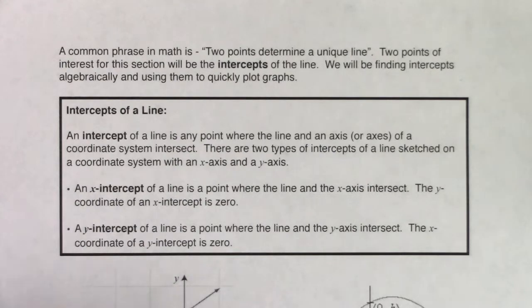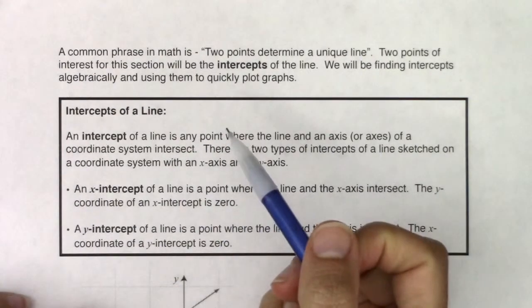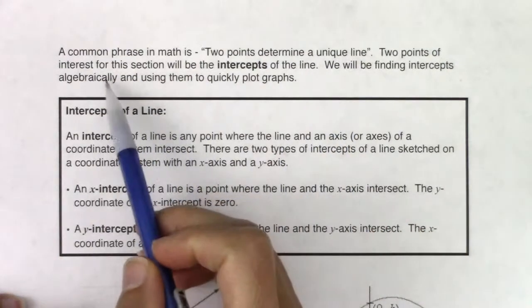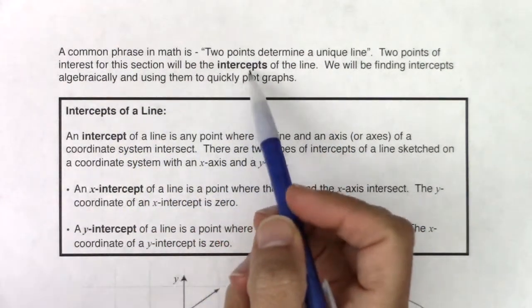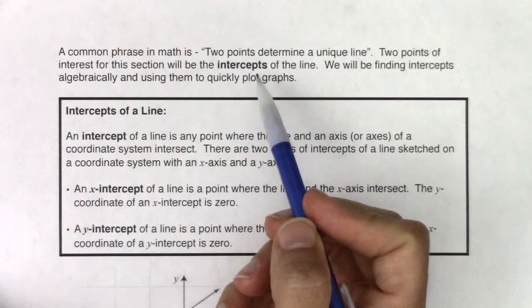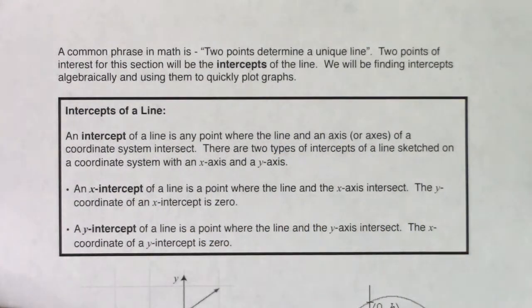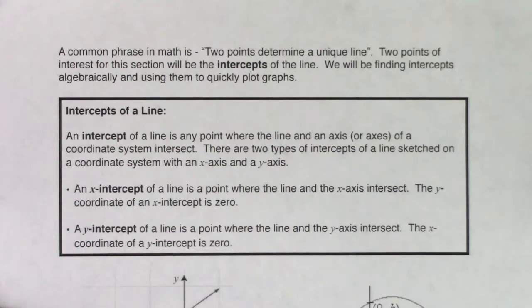Okay, Math 31. A common phrase in math is two points determine a unique line. Two points of interest for this section will be the intercepts of the line. We will be finding intercepts algebraically and using them to quickly plot our graphs.